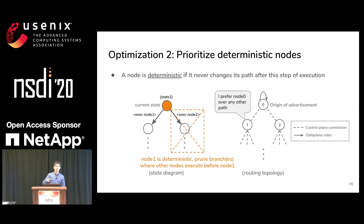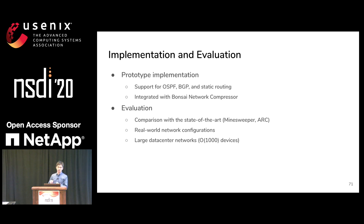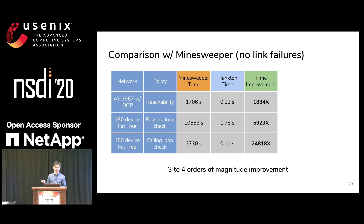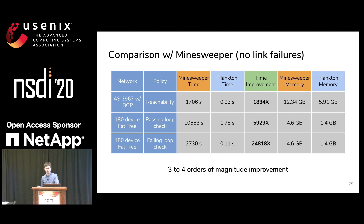With these two and other optimizations, we implemented a prototype of Plankton with support for OSPF, BGP, and static routing. We evaluated it on various scenarios, focusing here on the comparison with the state-of-the-art verification tool Minesweeper. Without link failures, Plankton is faster than Minesweeper by around three to four orders of magnitude in terms of time, with memory improvements as well. With a single link failure, Plankton still outperforms Minesweeper by around two to three orders of magnitude with slight memory efficiency improvement.